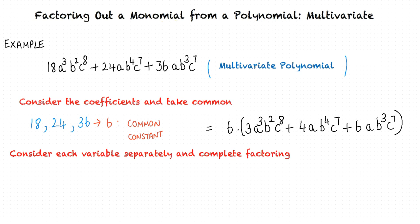Next, we consider each variable separately and take the variable raised to the appropriate power out of the expression to complete factoring the multivariate polynomial. Remember that the expression we take out as common must be a monomial, because we are interested in factoring out a monomial from a polynomial.